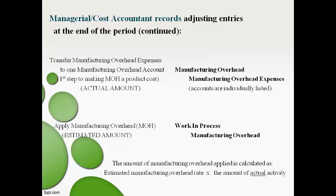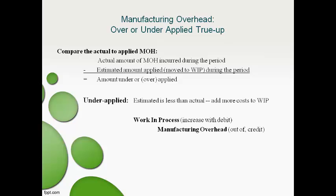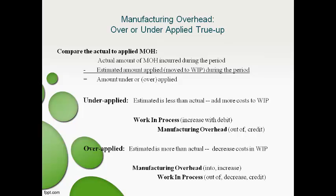The estimated amount moved to work in process will not equal the actual amount, so a true-up or adjustment to actual is necessary. The next entry is to make the estimated amount equal to the actual amount of overhead costs during the period. Under-applied means the estimated costs moved to work in process are lower than the actual cost — the difference must be added to work in process. Over-applied means the estimated cost is higher than actual — the cost in work in process must be decreased. This entry makes the manufacturing overhead cost in work in process equal to the actual cost incurred.